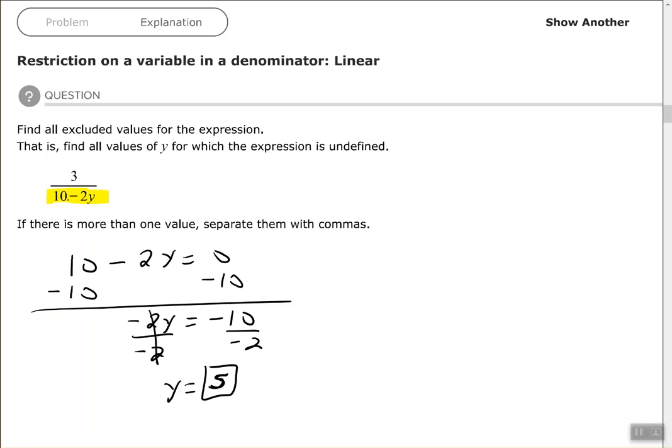y with 5, I would have 10 minus 2 times 5, or 10 minus 10, in my denominator, which would be 0. And anything divided by 0 is undefined. So that's why 5 is an excluded value from this expression.